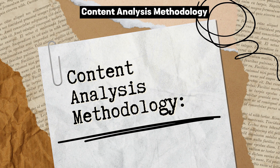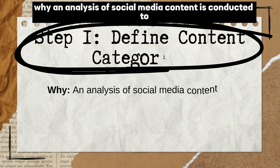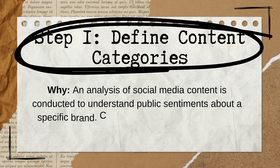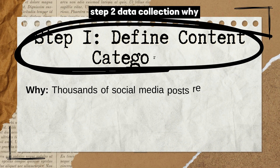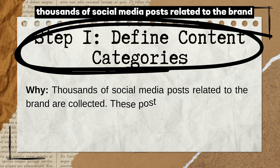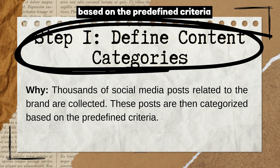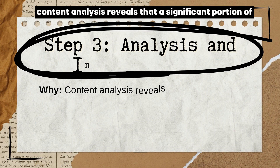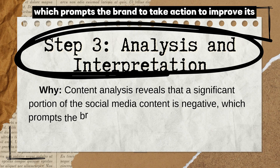Content Analysis Methodology — Step 1: Define Content Categories. An analysis of social media content is conducted to understand public sentiments about a specific brand. Content categories are defined to classify posts as positive, negative, or neutral. Step 2: Data Collection. Thousands of social media posts related to the brand are collected and categorized based on predefined criteria. Step 3: Analysis and Interpretation. Content analysis reveals that a significant portion of the social media content is negative, which prompts the brand to take action to improve its public image.